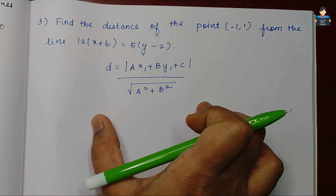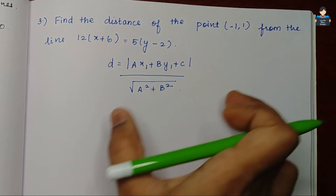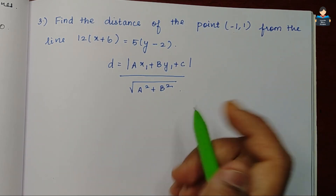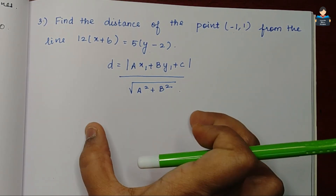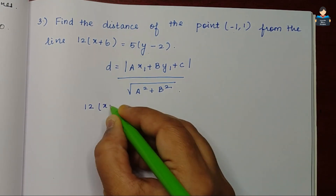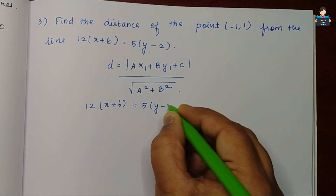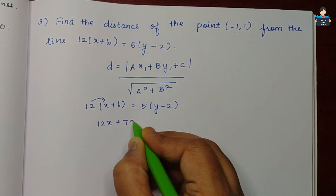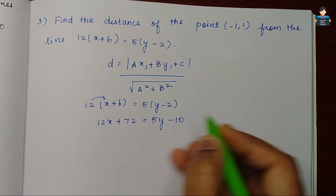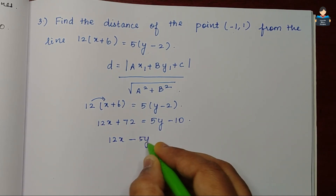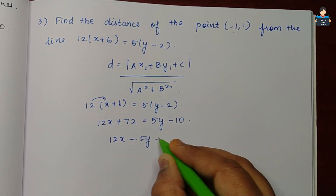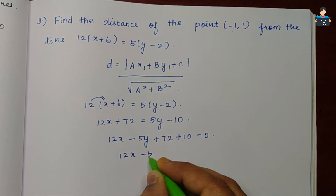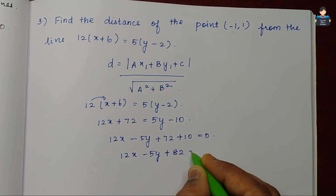இது தான் வந்த formula. Distance formula-க்கு நம்மளோட line-ஓட equation-ஐ standard form-க்கு மாத்தணும். So, 12x plus 72 equal to 5y minus 10, வந்து நம்மளுக்கு வரும். So, 12x minus 5y plus 82 is equal to 0 வந்து வரும்.